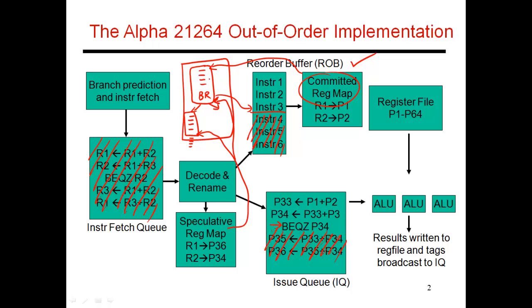As an example, there might have been some instruction here that wrote to R1, and that got renamed to say P38. Then there might have been an instruction here that also wrote to R1, which got renamed to P47. My speculative map table is currently saying P47, but I want to roll it back so that it should instead say that the latest value of R1 is sitting in P38, because we need to undo the effects of everything that happened along this mispredicted path.